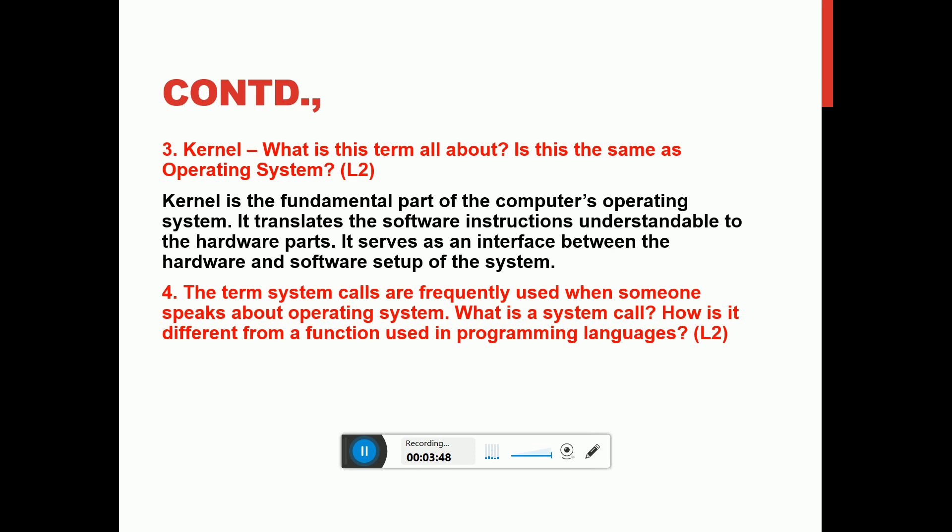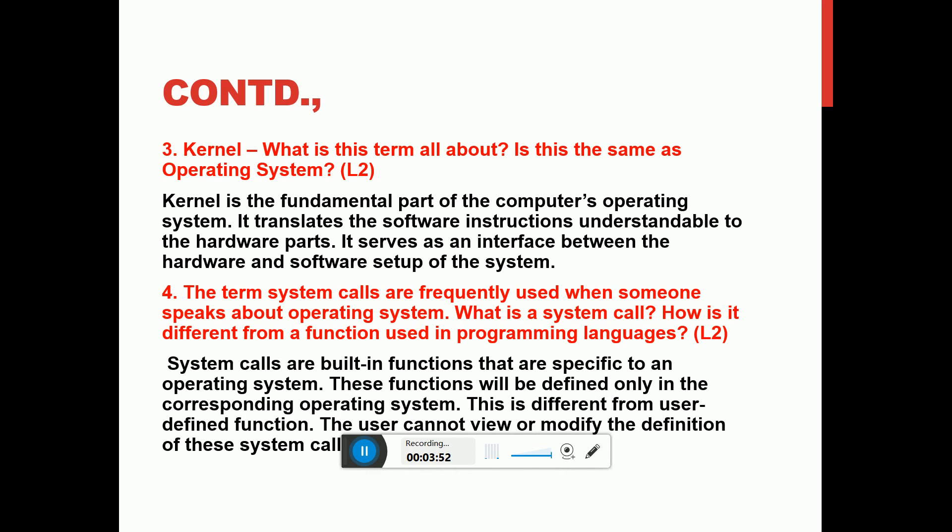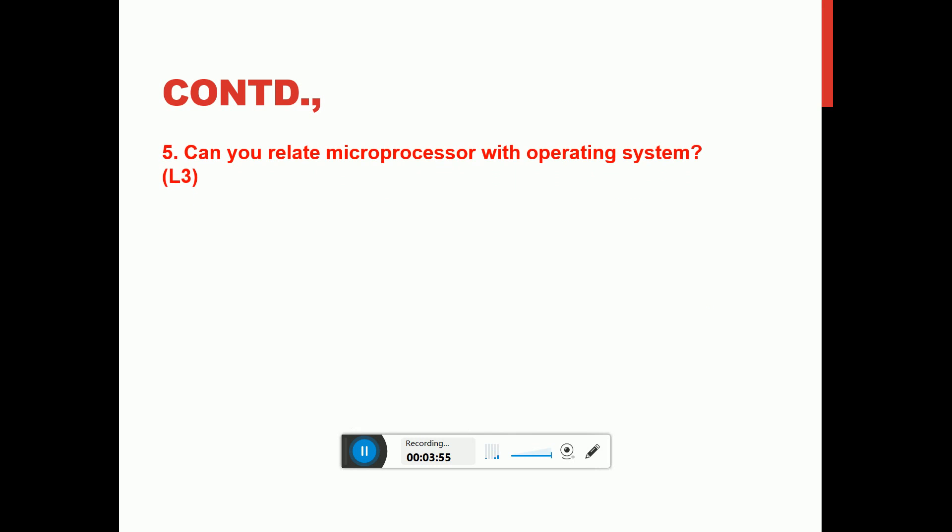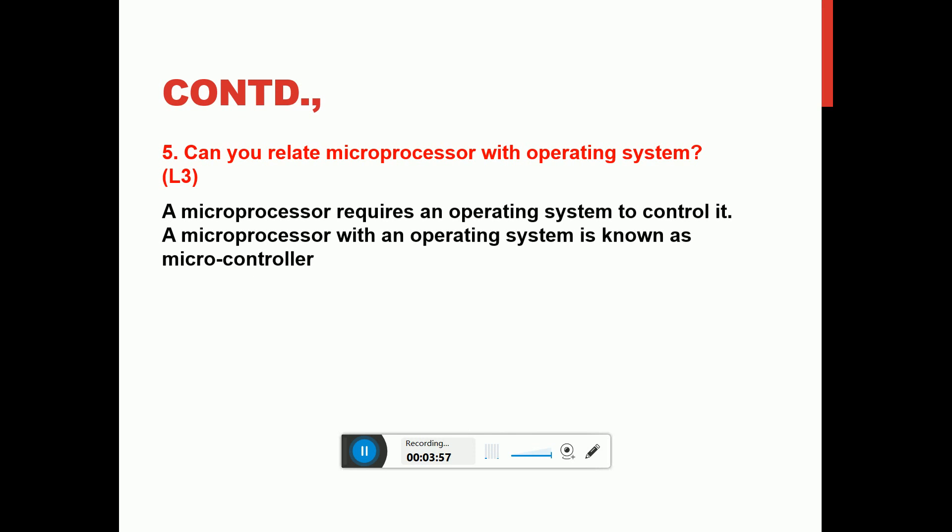So system calls are something which are very specific to an operating system, like the fork, write, read, et cetera. All these are the system calls that are pretty much specific to one operating system, and that's why they are called system calls. Next question: can you relate microprocessor with an operating system?